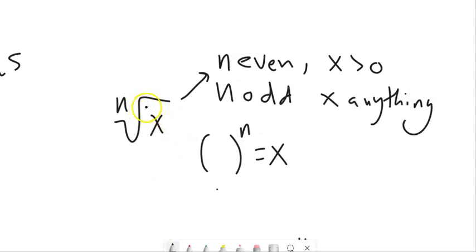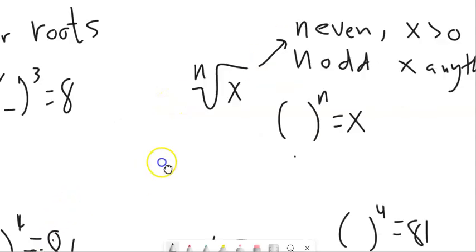Because an odd number of multiplications, you can get a negative number. So let's keep playing around with these.